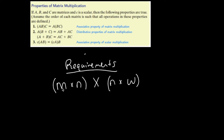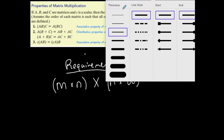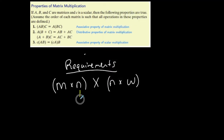This is the order of the first matrix and this is the order of the second. The first matrix has M rows and N columns. The second matrix has N rows and W columns. So the first requirement that has to be met is these have to be equal — the number of columns in the first matrix has to match the number of rows in the second.